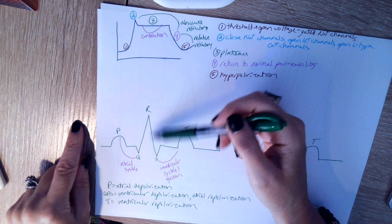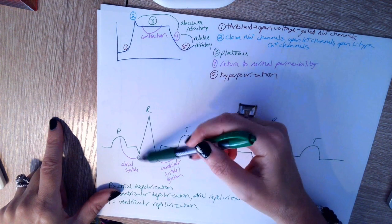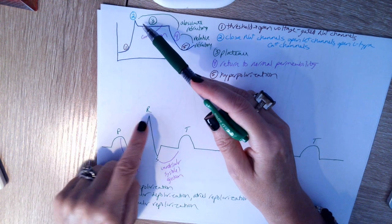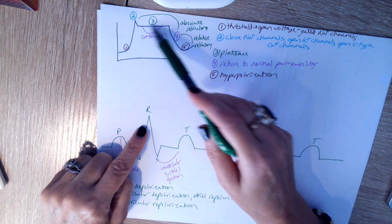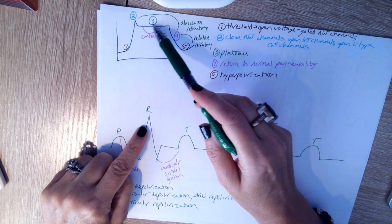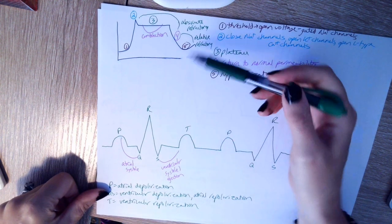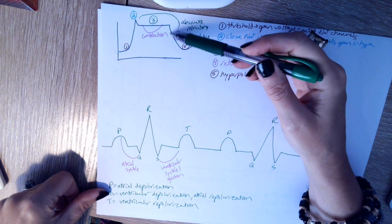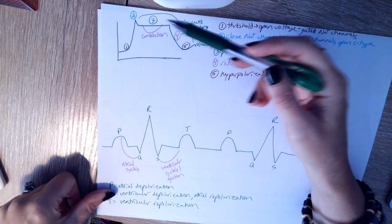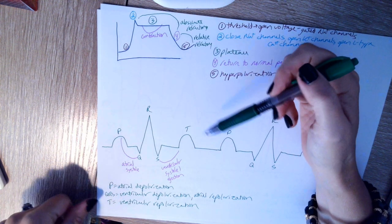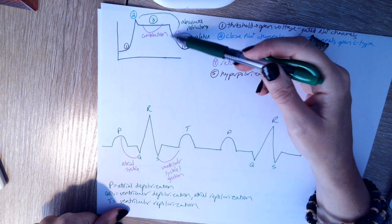For QRS, this is where we have the ventricles depolarizing. So all of the cells in the ventricles are doing this. By the time we hit R, which is the peak of this QRS complex, we have the cells in the ventricles being at the peak of their action potential. Now also, during QRS, we'll have the atria going into their repolarization. You can't see it on the EKG because it's obscured by this really large electrical activity of the ventricles depolarizing. And then we get to T, and that's where the ventricles are repolarizing, so all the cells are doing this part.